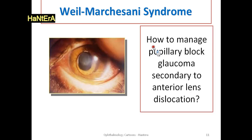Treatment of a lens dislodged into the anterior chamber is initially pharmacological with mydriasis and cycloplegia, to permit posterior migration of the lens behind the iris in conjunction with ocular massage through a closed lid to promote this posterior migration. Surgical treatment will then be needed to prevent further complications.